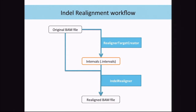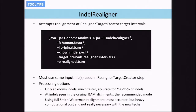After running RealignerTargetCreator we have our intervals file. We now use our original BAM file, the intervals file, and potentially a list of known sites as input to the IndelRealigner. The sample command line uses the reference genome, the original BAM, a list of known indel files, the intervals where we want to do the realignment, and specifies the output BAM file.